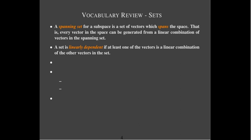We say a set is linearly dependent if at least one of the vectors is a linear combination of the other vectors in the set. In a sense, it provides no new direction information because it is already one of the directions which could be generated from the other vectors. On the other hand, if all the vectors are providing new independent direction information that cannot be generated from the other vectors, we call that set linearly independent.